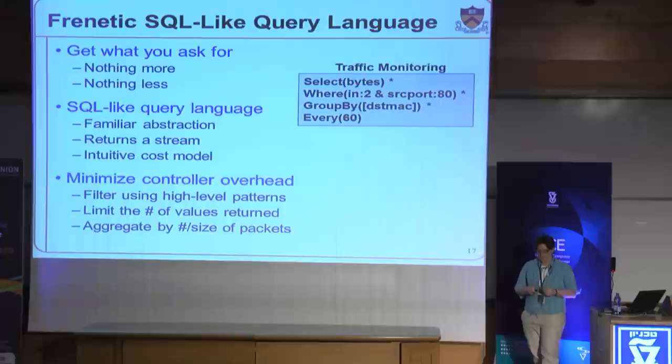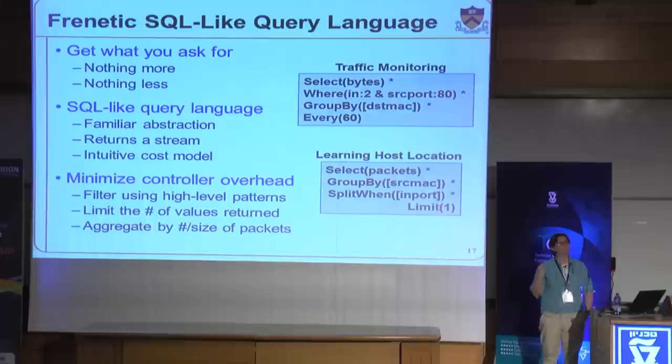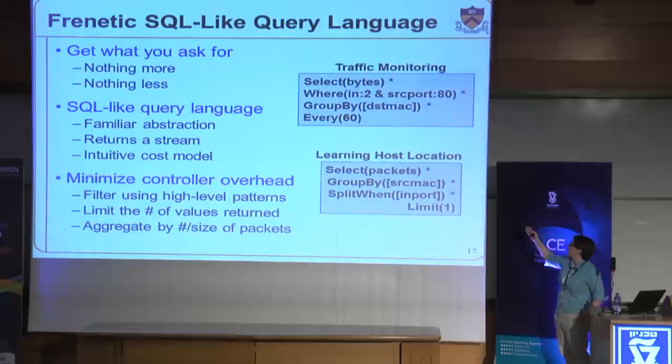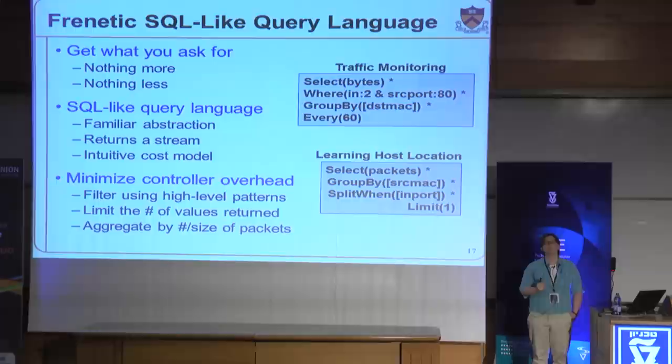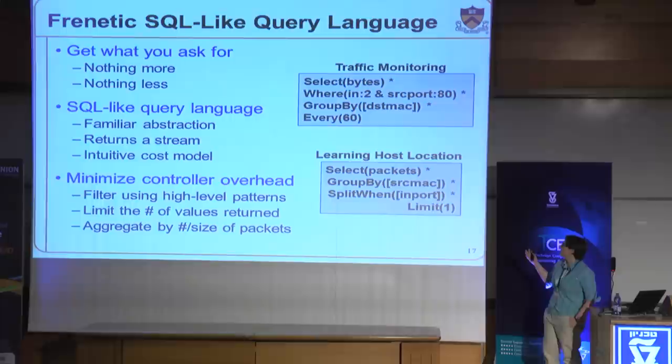A second example corresponds to the mobility example: the programmer says they want to see packets — not just byte counts but actual packets — every time a source MAC address arrives on a new input port, to learn that a host has moved to a new location. So I say I want to see packets, see them every time there's a new MAC address, split every time that MAC address has a new input port, and I only want to see one such packet. That's exactly what a learning switch or mobility application needs to see. The programmer doesn't have to deal with unfolding of rules and will always see just one packet, even if more than one finds its way to the controller.